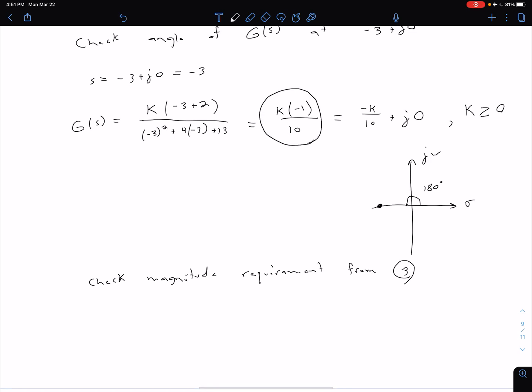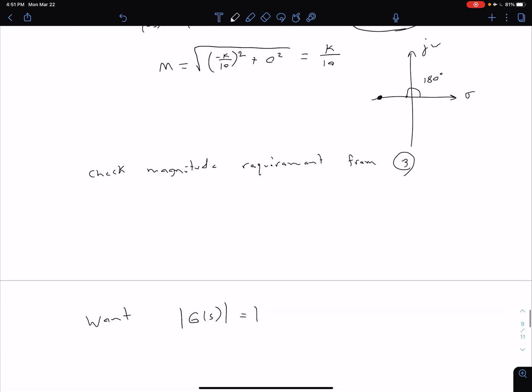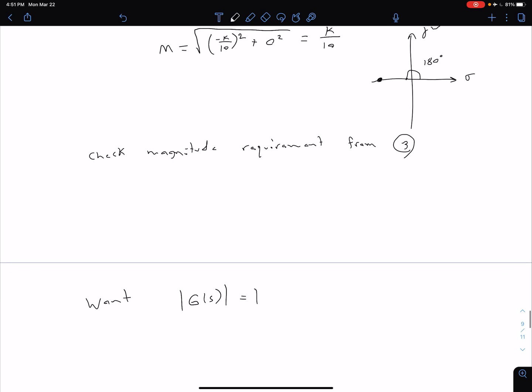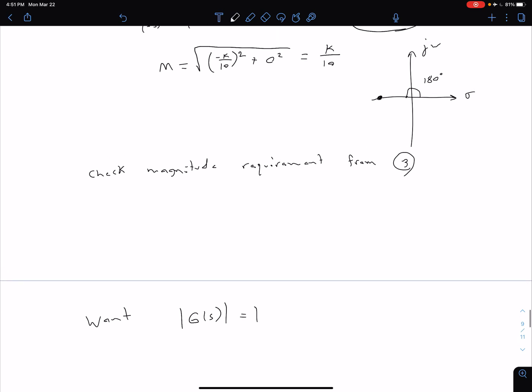Going through the steps explicitly, the magnitude equals sqrt[(-K/10)² + 0²], which is just K/10. If we want that magnitude K/10 to equal 1, then K = 10.